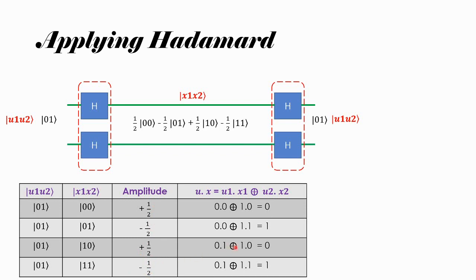Since the sign is minus whenever u·x = 1 and plus whenever u·x = 0, we can represent the amplitude as (1/2) × (−1)^(u·x). If u·x = 1, this becomes minus; if u·x = 0, this becomes plus. So I can represent the full superposition state as a sum over all x from |00⟩ to |11⟩, where the amplitude of each |x⟩ is (1/2) × (−1)^(u·x).